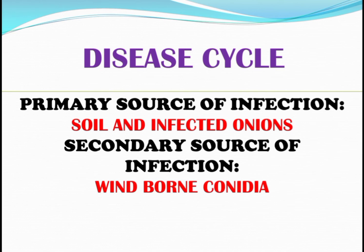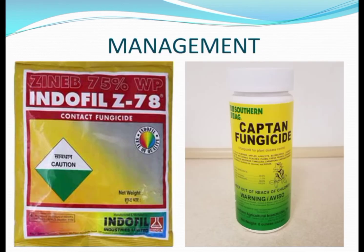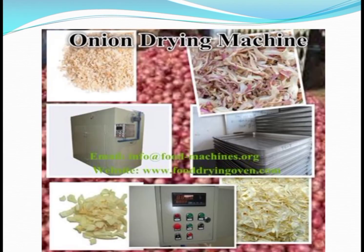Soil and infected onions act as the primary source of infection. Secondary source of infection is wind-borne conidia. Management: Protection from rains after harvest is necessary. Spray with 0.2% zineb or captan before harvest of crop. Dry the bulbs by hot air at 37 to 48 degrees Celsius before storage.